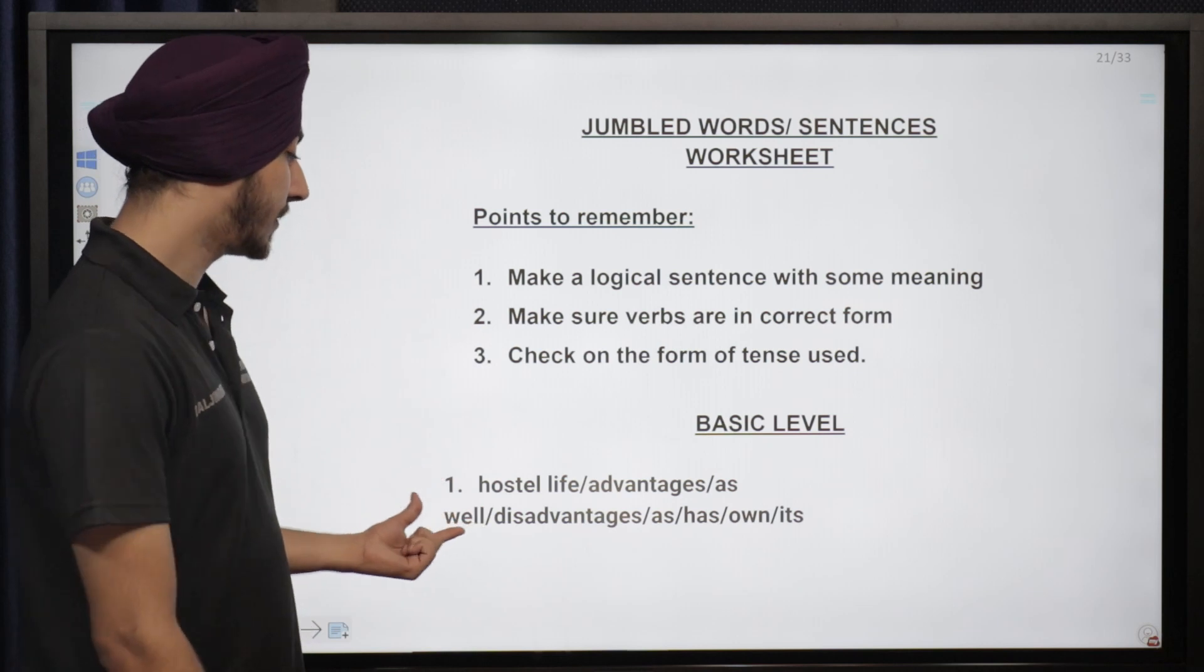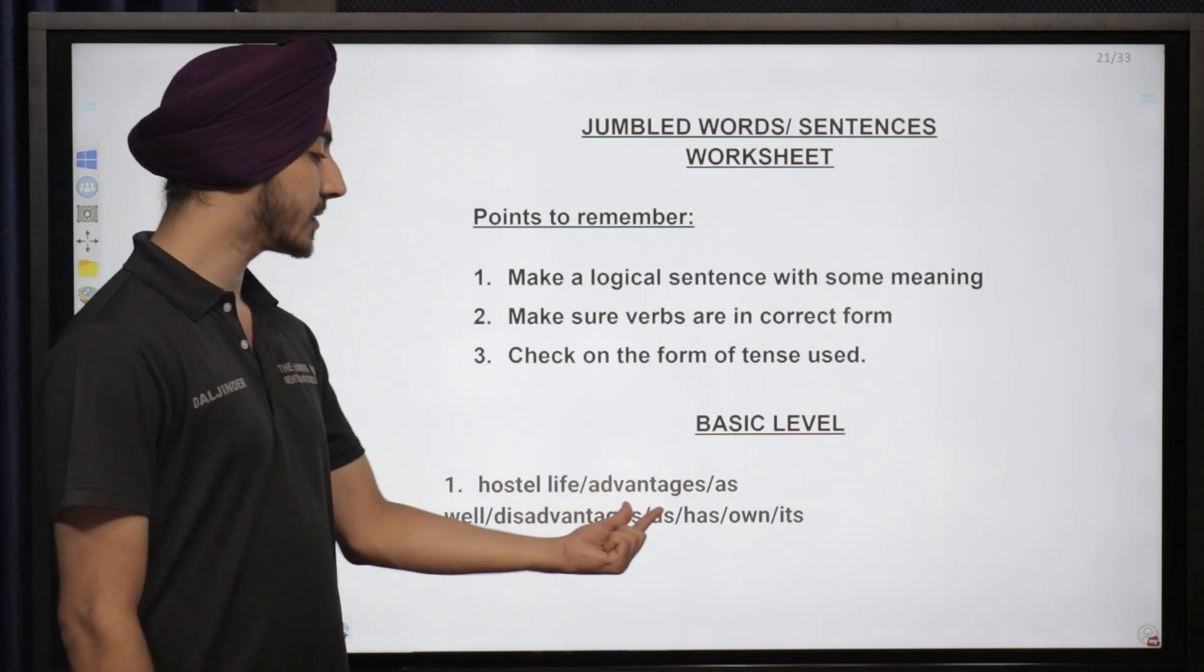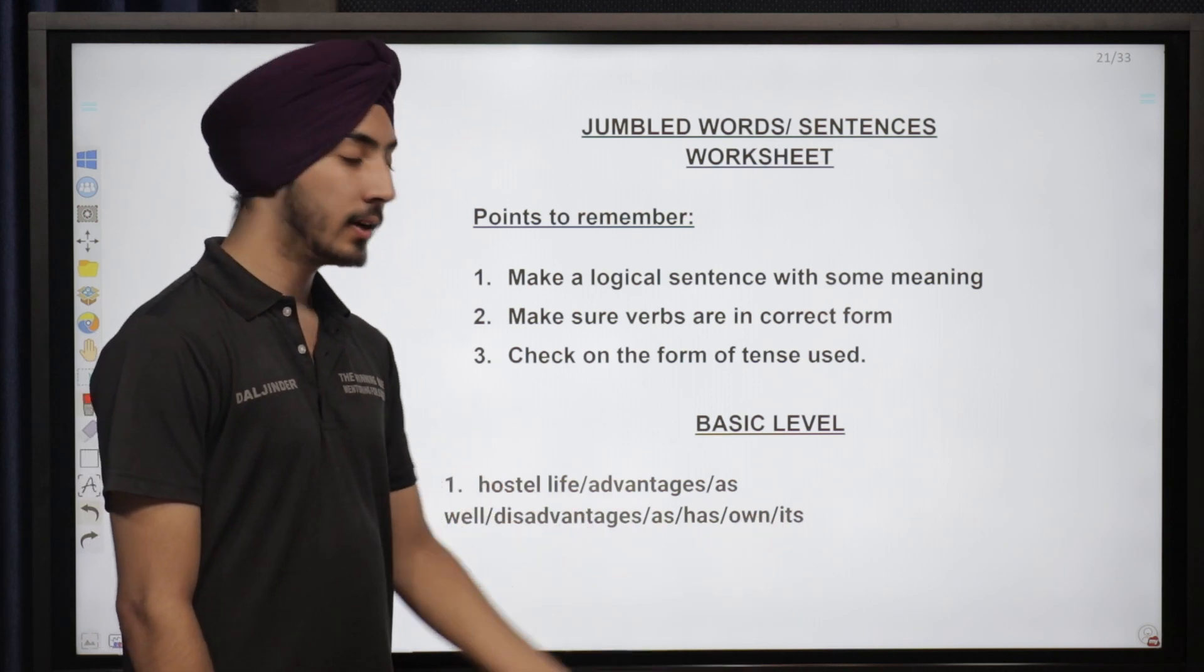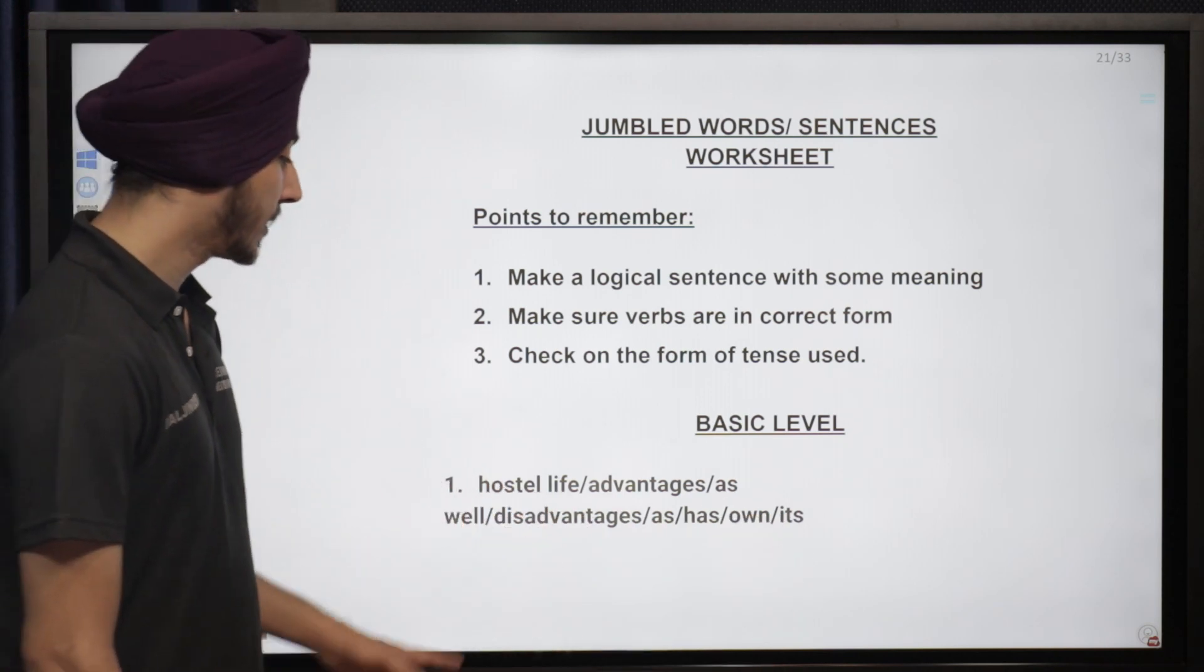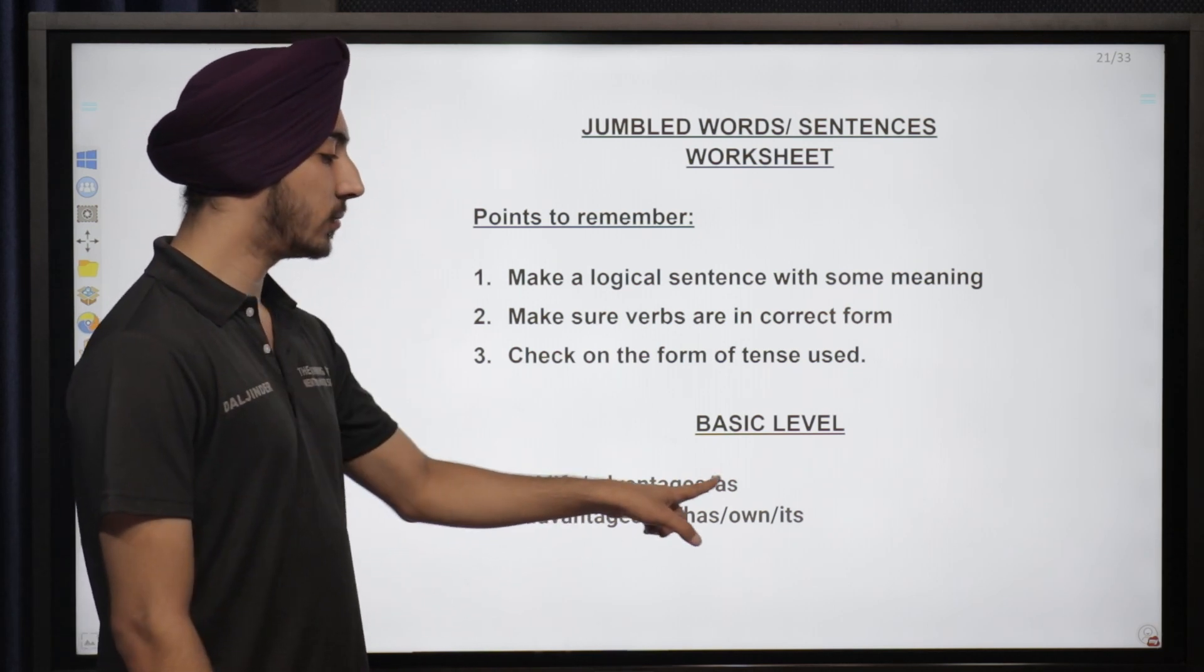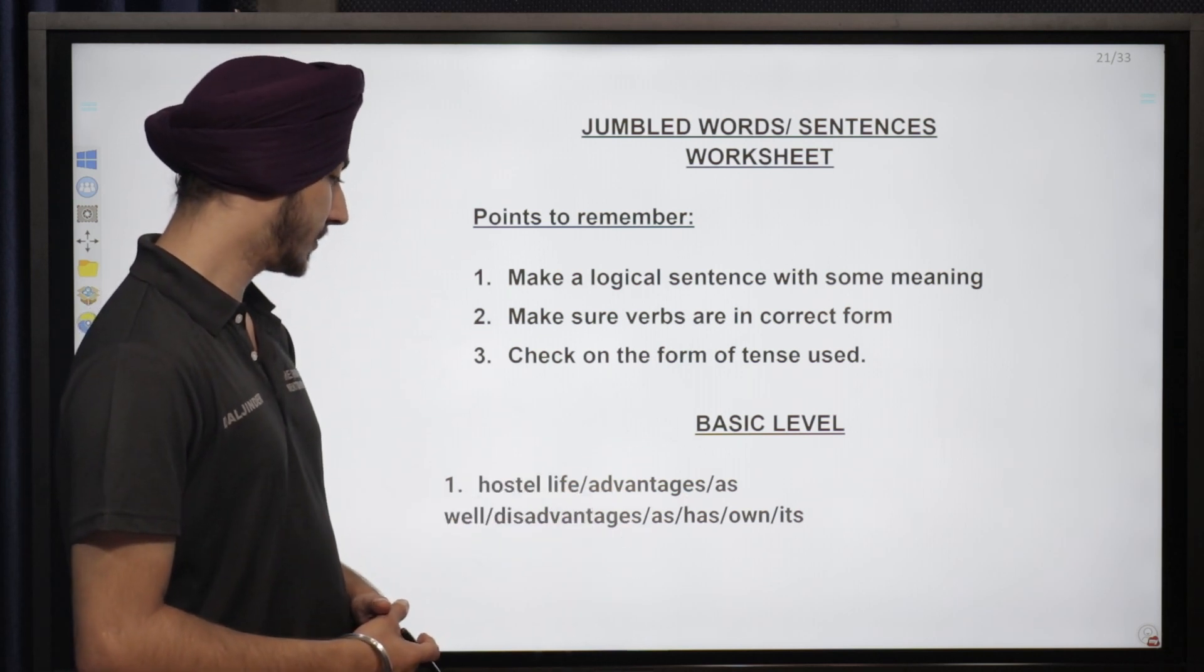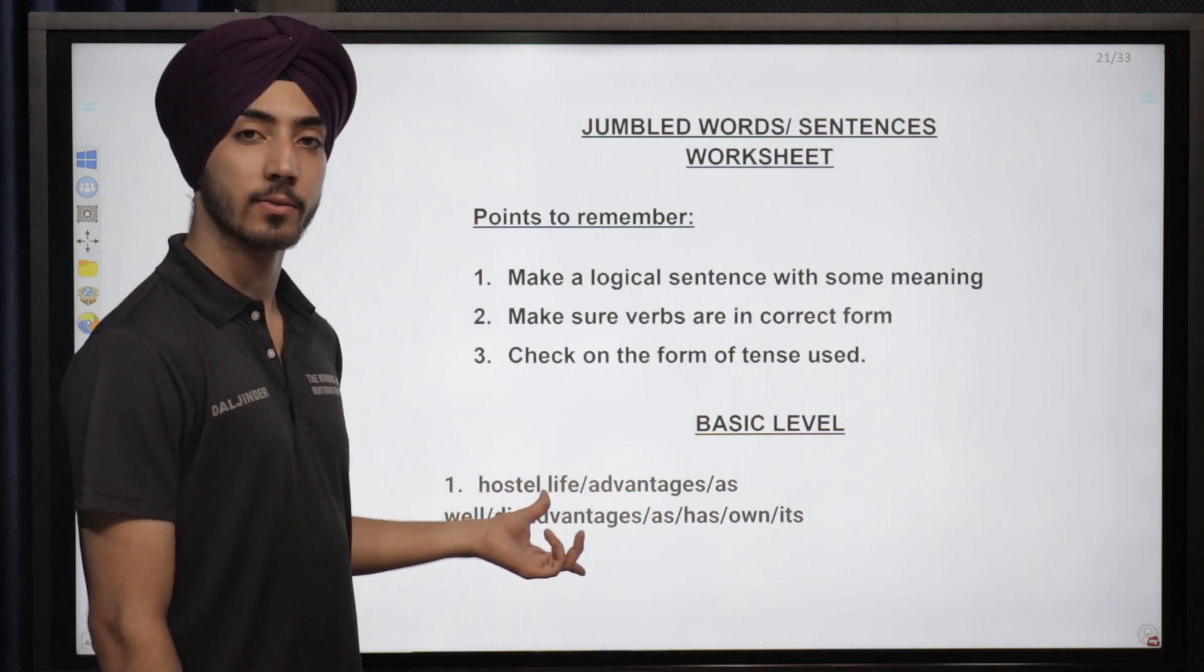Now let's look at the first question here: hostile life advantages as well disadvantages as has own it. Now we have to form a correct sentence of it. What can we say? Hostel life has its own advantages as well as disadvantages. That's the correct sentence we can form.